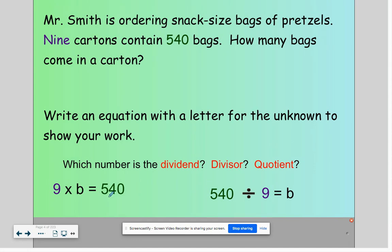Our dividend is 540. Our divisor is nine. Our quotient or our answer will be B.